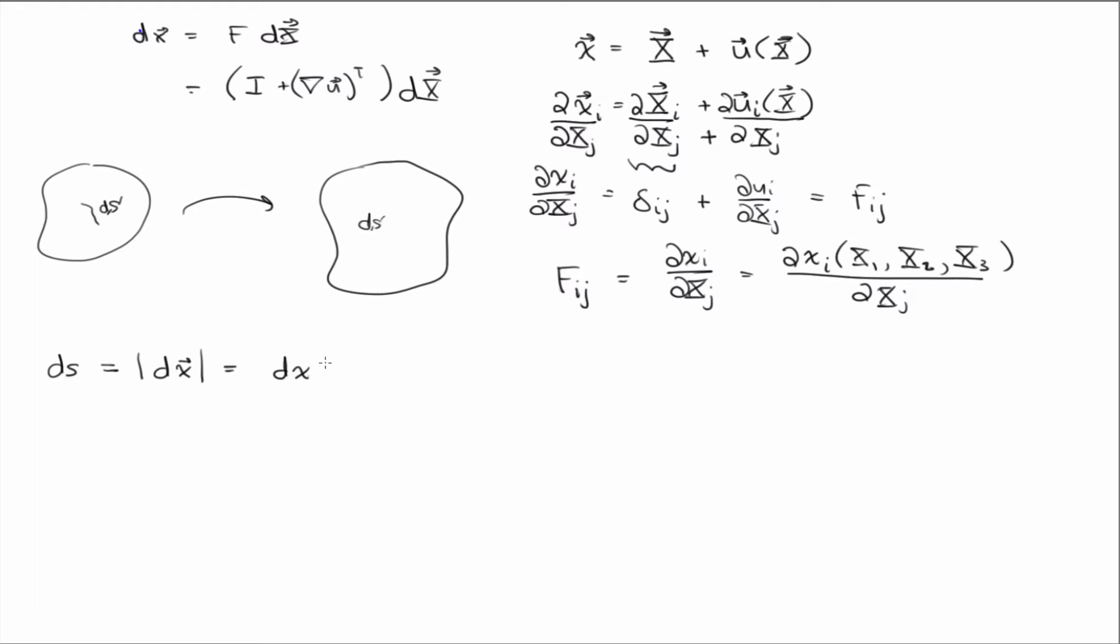The square root of the sum of the squares of the components, right? So my vector dx has component dx_1. If I square that, dx_2 squared plus dx_3 squared. The square root of all that is the magnitude, right? Right? Shake your head yes. I mean, the magnitude of a vector is the square root of the sum of the squares of the components, right? Yes. Everyone knows that, right? Hope so.